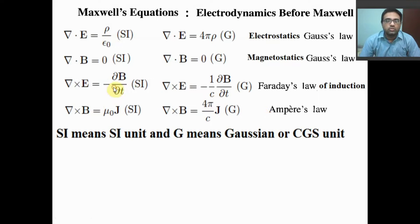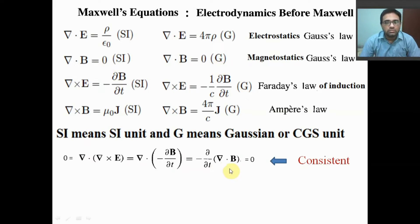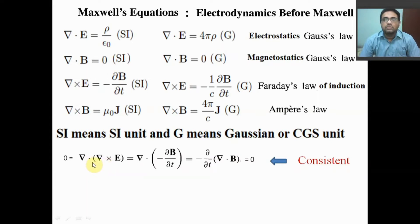Let us try to understand. If we choose the third equation and apply the divergence on both the left side and right side of this equation, it becomes like this. If we take this divergence inside the parenthesis, it becomes del·B, and you know from the second equation del·B equals 0. So the right side term becomes 0, and the left side term is divergence of curl E. Divergence of curl E will always be 0 because this is a vector identity — divergence of curl of any vector field is always 0. So this equation is consistent when we apply divergence on both sides.